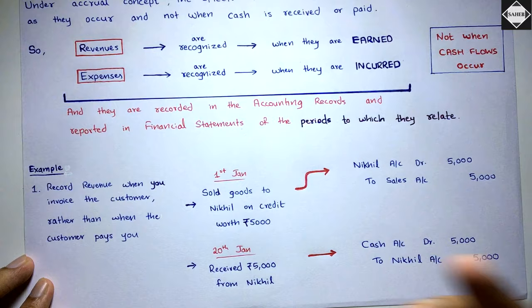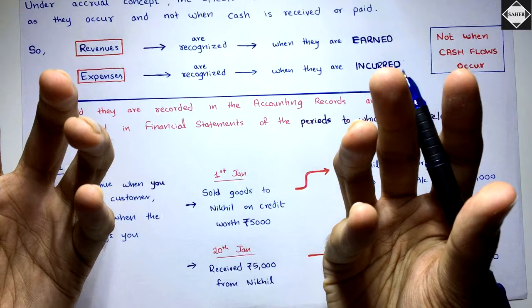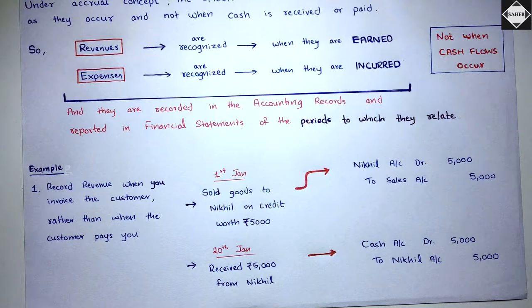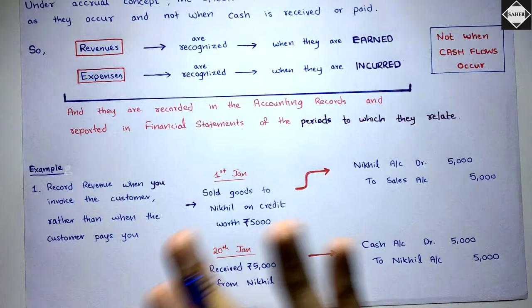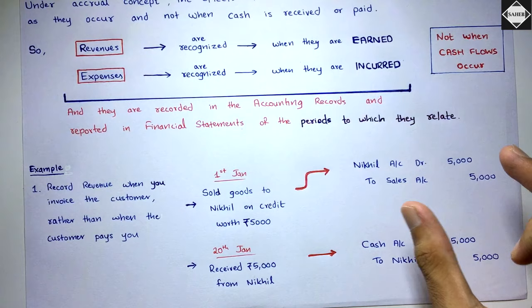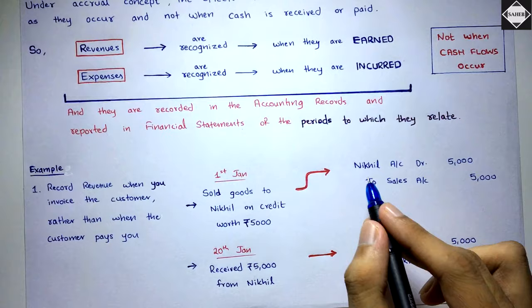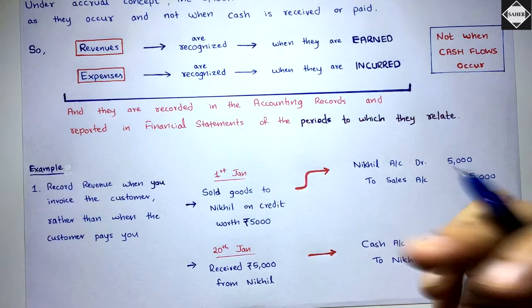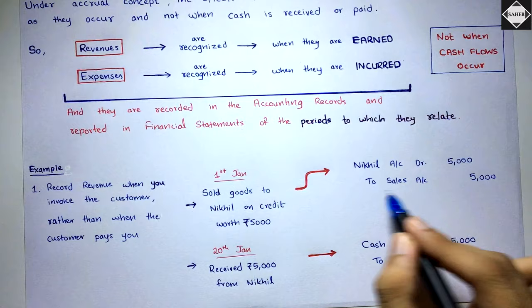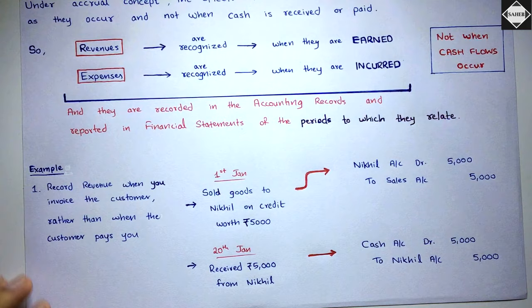Mr. Nickel didn't pay you anything — he promised to pay in the future. So Mr. Nickel is your asset; you have to receive money from him, and you have made sales, which means revenue. The entry would be: Nickel account debit to sales. You will not wait until Nickel pays you — you will immediately do the recording. Nickel account debit five thousand; receivables account debit to sales five thousand. You debit the Nickel account because future benefit is expected from him, and you credit sales for the revenue recognized.